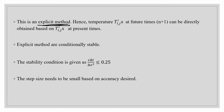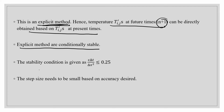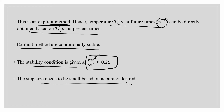Explicit methods are conditionally stable. The stability condition is: c·Δt/Δx² must be less than 0.25. If this is satisfied, the numerical scheme is stable. The time step Δt should be chosen small enough to meet this condition and ensure accuracy. Now let's write the MATLAB code.